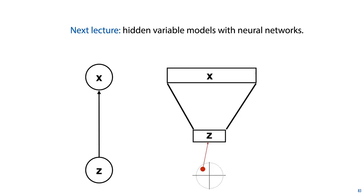For now, we'll leave the business of hidden variable models and alternating optimization, but in the next lecture, we'll look at how to apply some of these ideas in a deep learning setting. In the final video of this lecture, we will return to the question of social impact and apply some of the principles we've learned about probability.